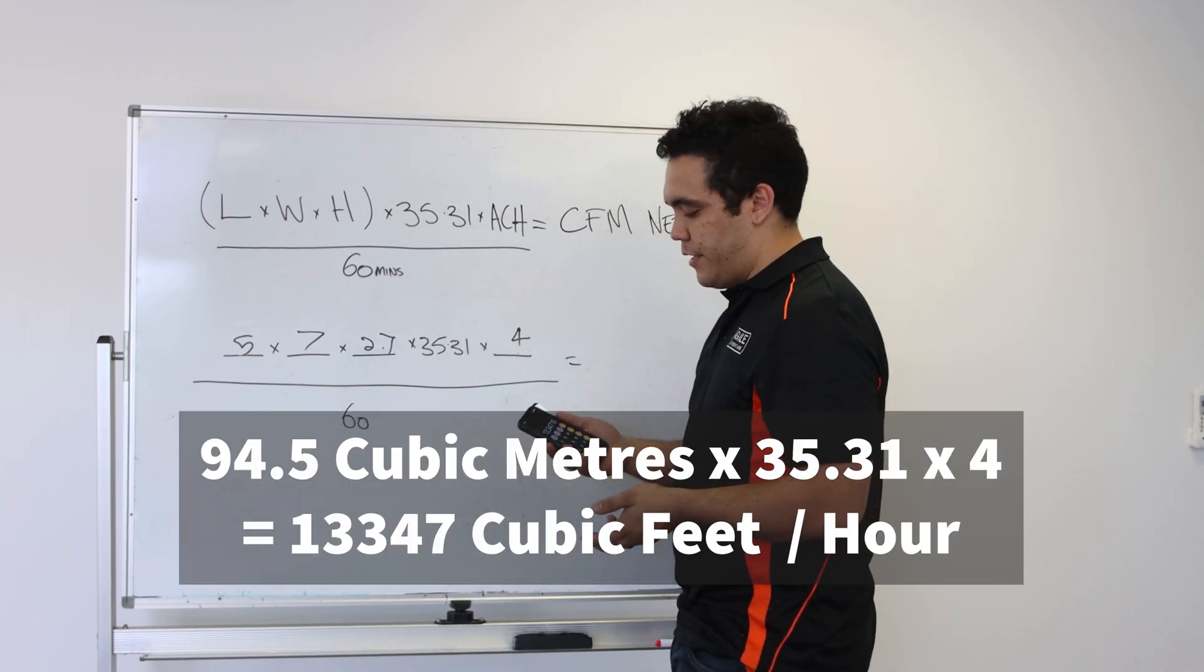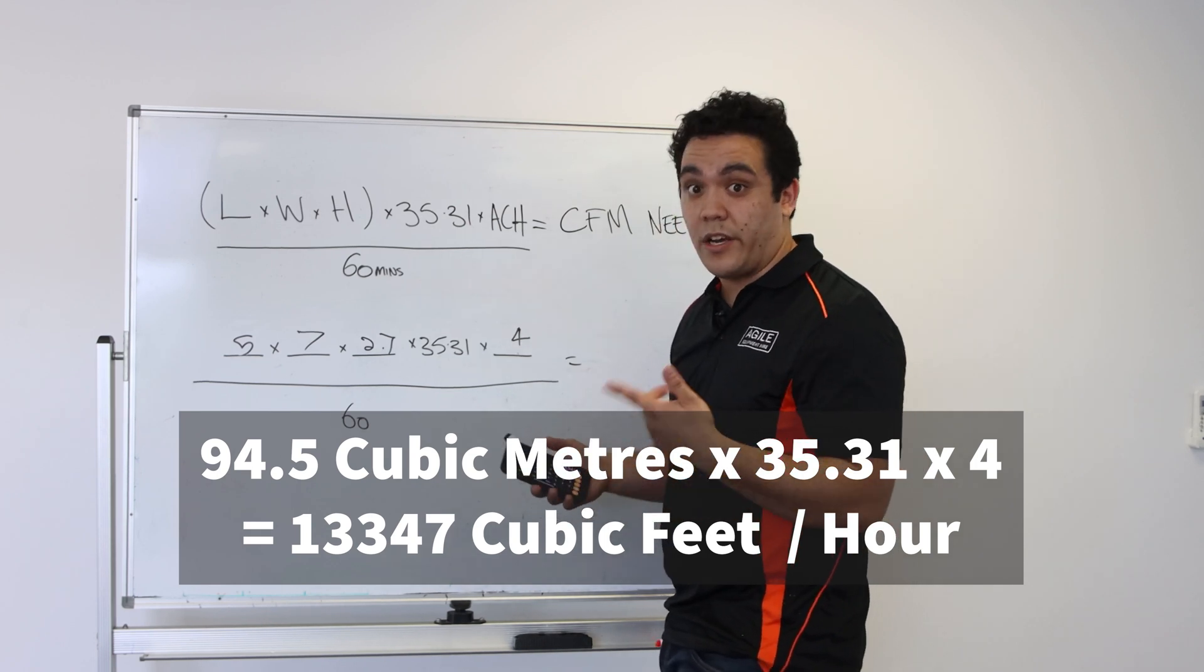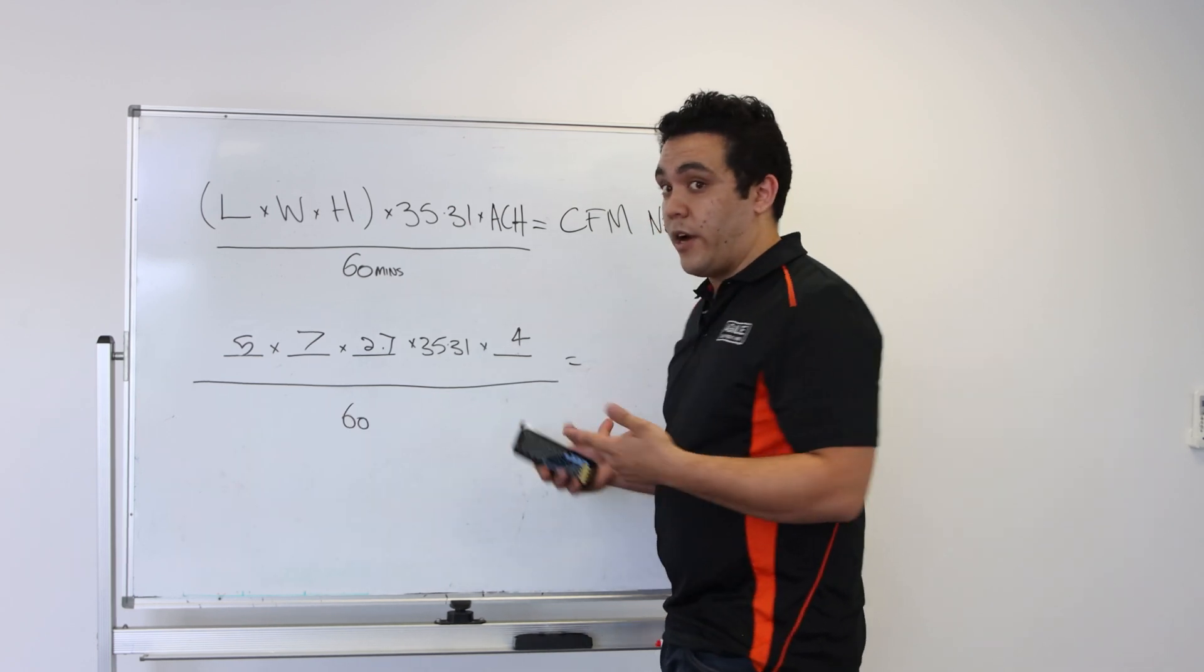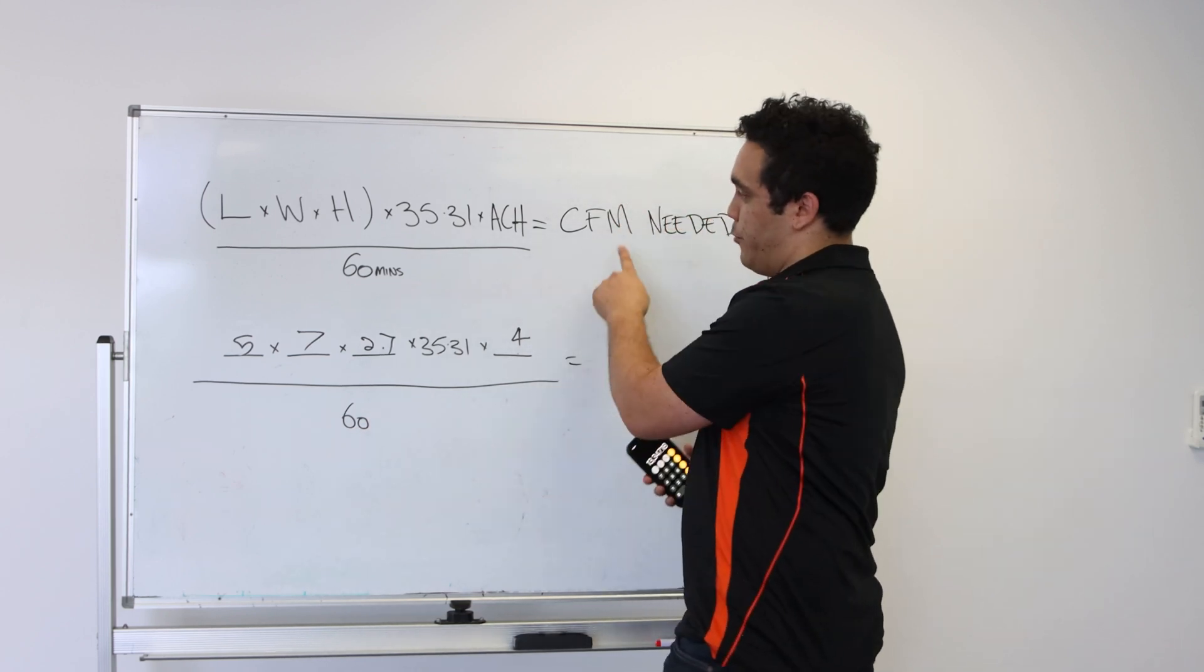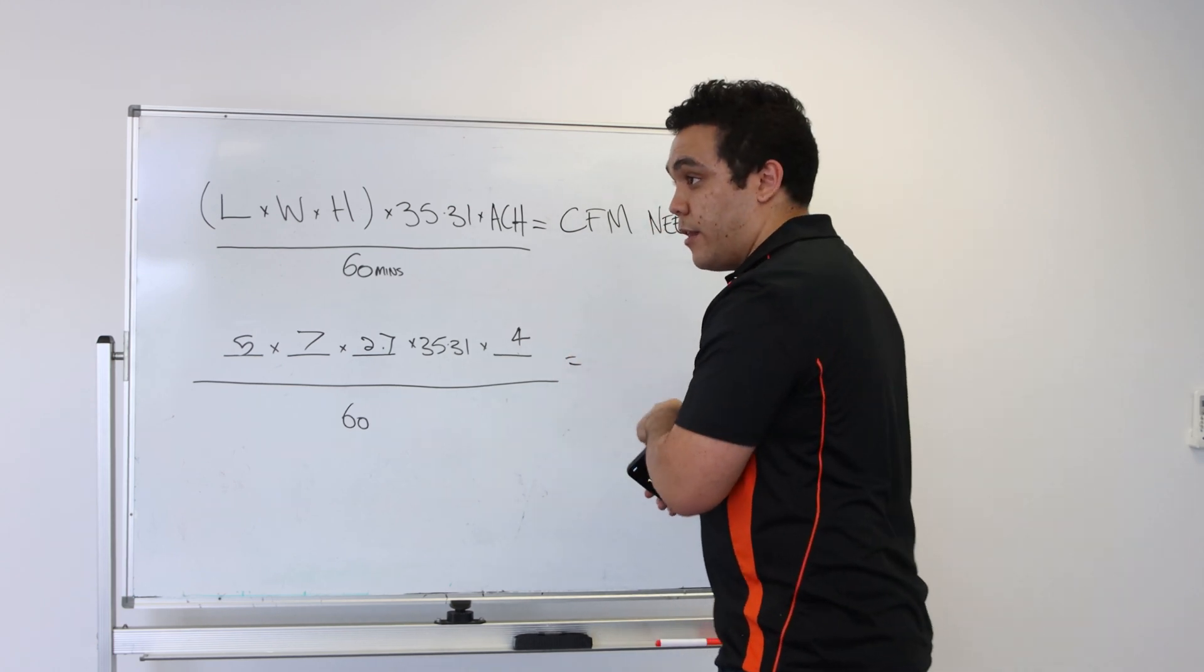We get a total of 13,347 cubic feet of air that we need to cycle through per hour. So we just divide that by 60 and we will get cubic feet per minute of air that we need to cycle through.